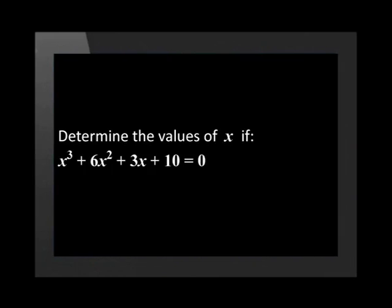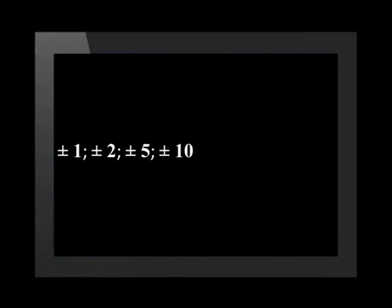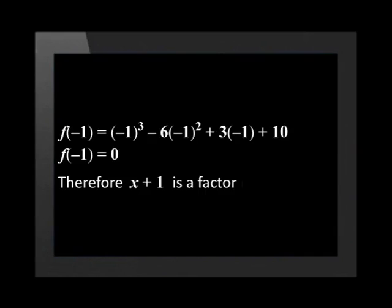Determine the values of x if x cubed minus 6x squared plus 3x plus 10 is equal to 0. The factors of 10 are plus or minus 1, plus or minus 2, plus or minus 5, and plus or minus 10. Now let's use the factors of 10 to find one of the factors of the expression. f(−1) is equal to negative 1 cubed minus 6 multiplied by negative 1 squared plus 3 multiplied by negative 1 plus 10, which is equal to 0. So x plus 1 is a factor.